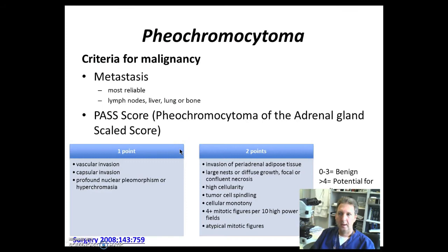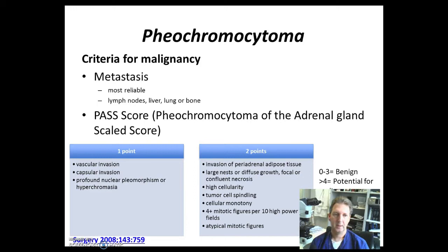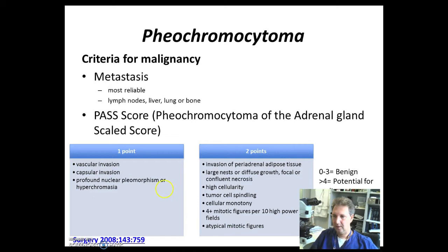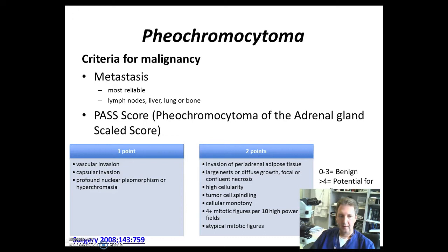Pheochromocytomas can progress into malignancy, and the most reliable criteria is the presence of metastasis. If metastasis occurs, they go to the lymph nodes, liver, lung, and bone. There is also a pheochromocytoma of the adrenal gland scale score which assigns a series of points: one point if there is vascular invasion, capsular invasion, or profound nuclear pleomorphism, atypia, and hyperchromasia. Two points if there is invasion of peri-adrenal adipose tissue, large nest or diffuse growth, focal confluent necrosis, high cellularity, tumor cell spindling, cellular monotony, or more than four mitotic figures per ten high-power fields, and atypical mitotic figures. If these lesions add up more than four points, there is potential for malignancy.